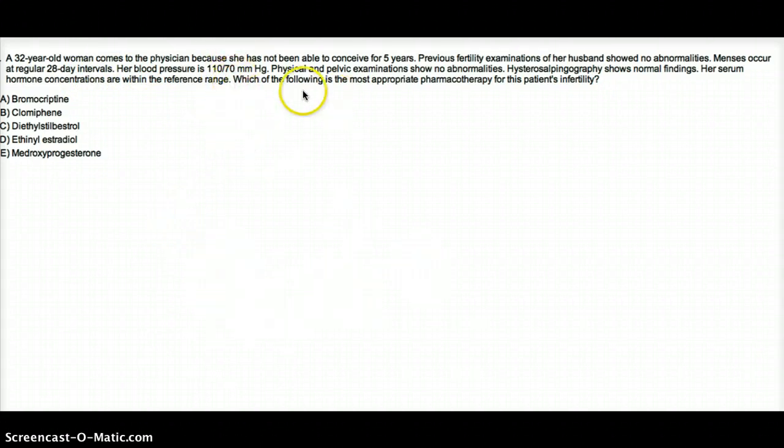Her blood pressure is okay. Pelvic exam shows no abnormalities. Hysterosalpingography shows normal findings, so everything is really normal. Even her hormone concentrations are within reference range. So which of the following is the appropriate pharmacotherapy for this patient's infertility?